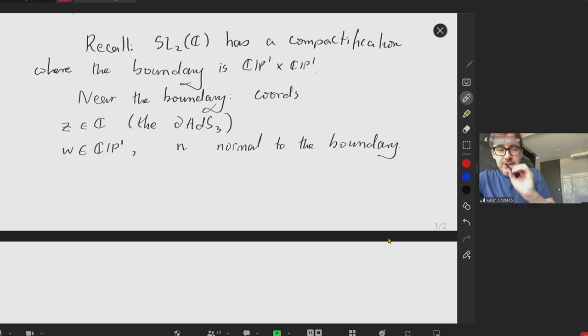Now, N really lives on a line bundle over CP1. So I'll explain in a second, it's related to the Hopf fibration, which means that N has a pole when W is infinity. In other words, N transforms like dW to the half. It's spin a half-form.